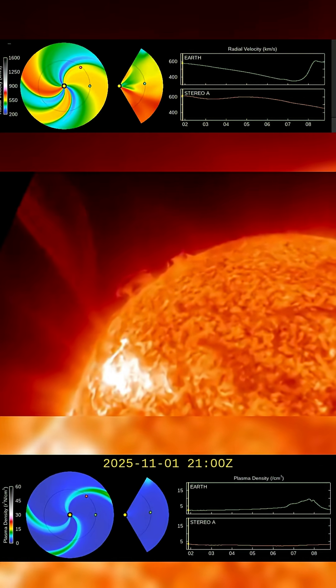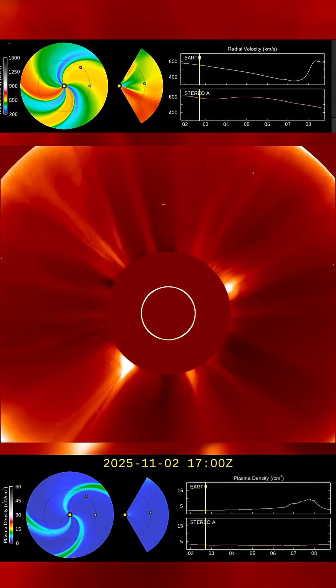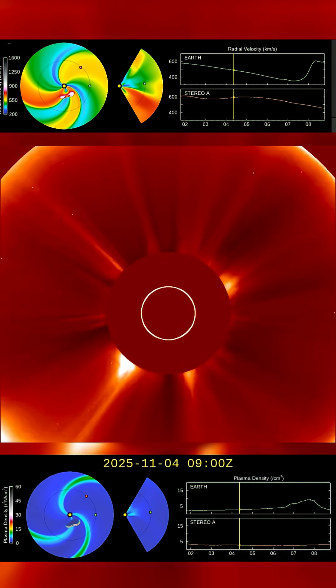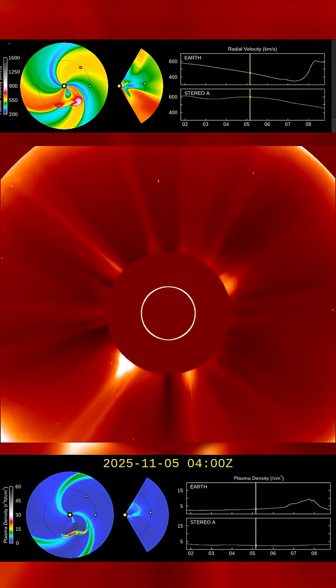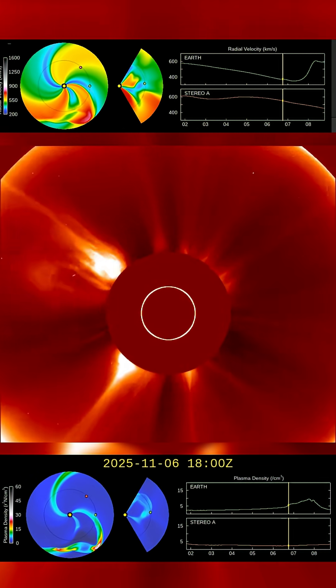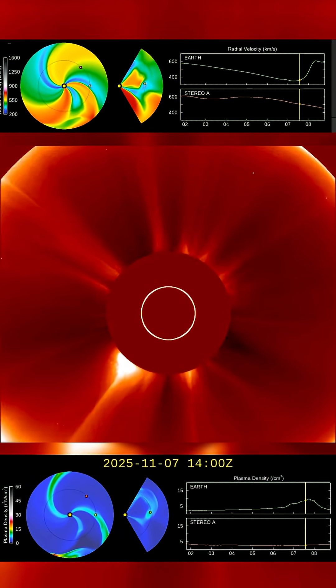A powerful X 1.8-class solar flare erupted today at 1734 UTC, marking one of the strongest eruptions of 2025 so far. The blast came from active sunspot region AR4274, which has been rapidly growing in magnetic complexity.